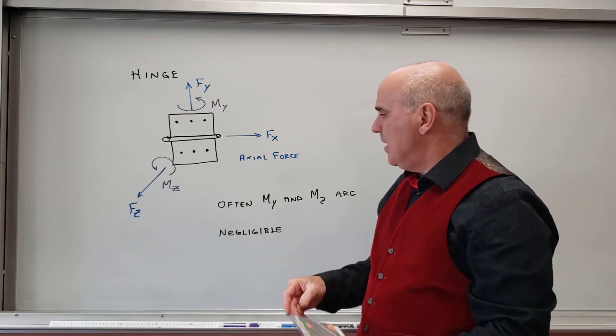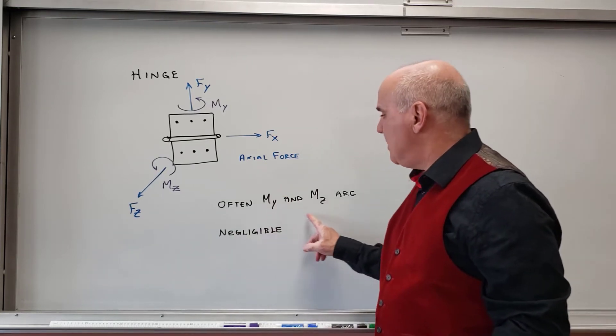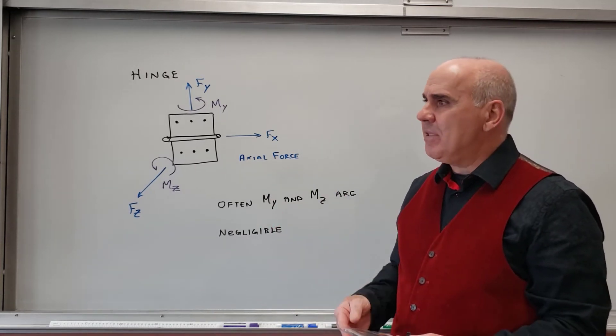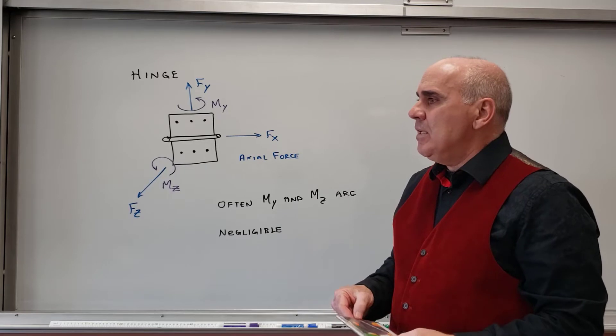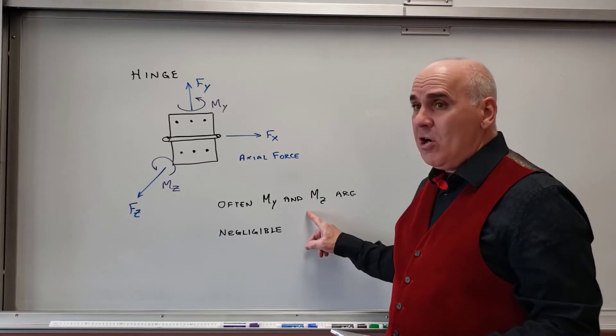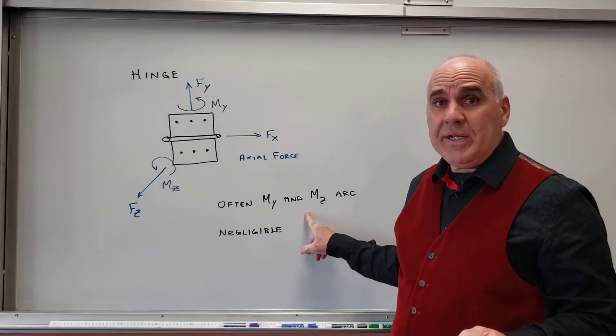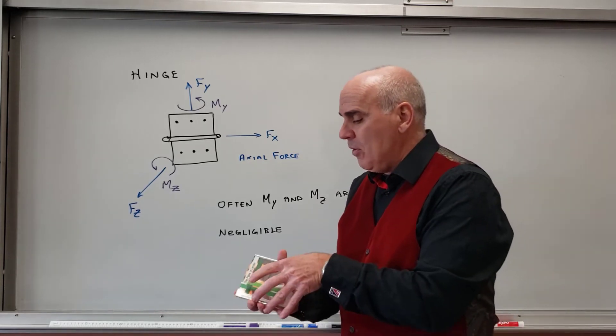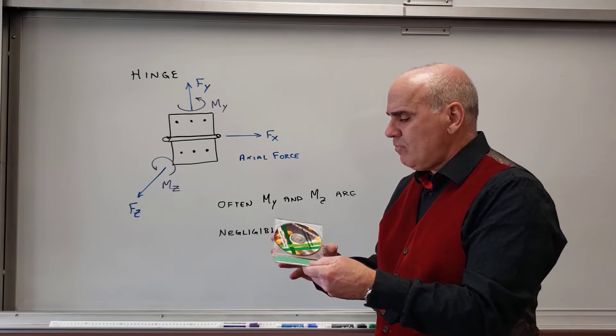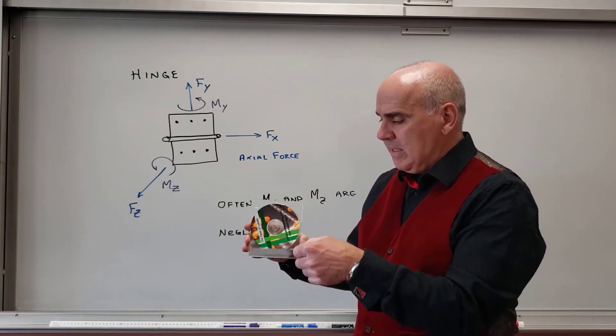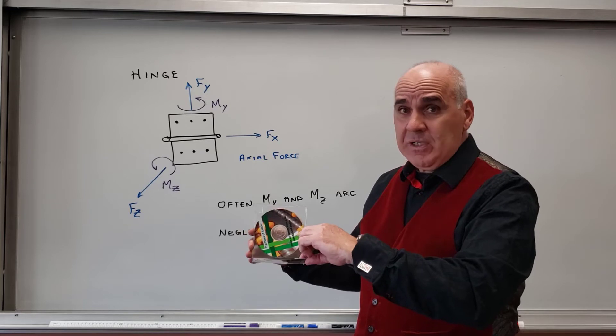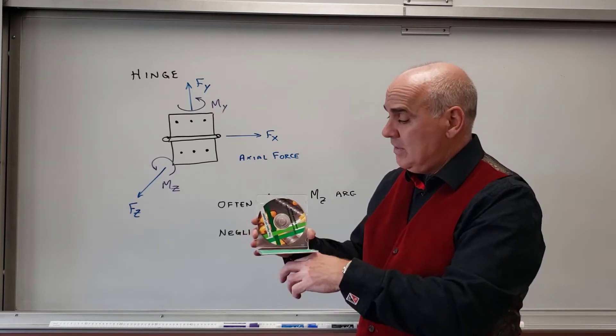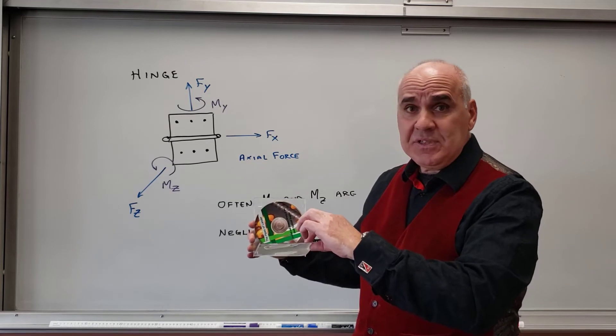But having said all that, very often the Y and the Z moments are very small compared to other moments in the system. So you got to be a little careful about that. Generally, I assume that they're small unless I see that the system's quite exaggerated. And then I'm going to assume that they're there. For example, if I had a hinge system like this, and I am lifting up on this corner with a relatively large force, that's going to try and twist this thing.